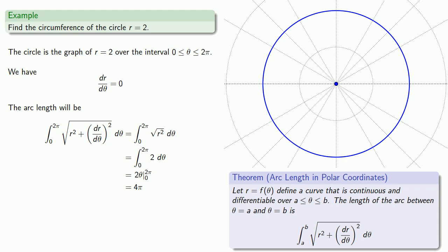And we find a value of 4π for the arc length. Since this circle has radius 2, then its circumference is going to be 4π. And so we have some confidence that this theorem giving the arc length is actually correct.